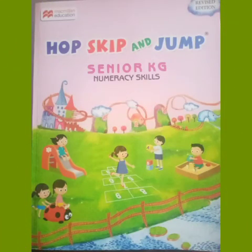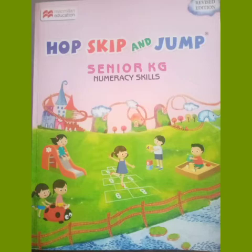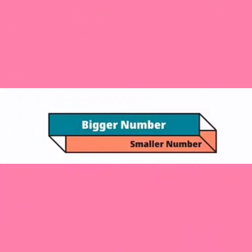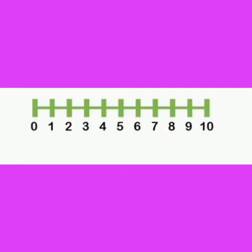Welcome to UKG subject max. Today we are going to learn a new concept: bigger number and smaller number. Let us consider the number line first. We are going to see bigger number — the number that is further away from zero on the number line is called the bigger number.